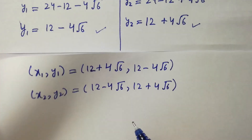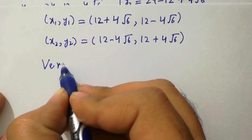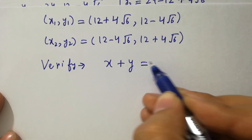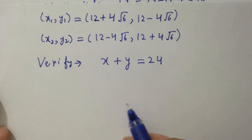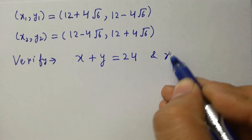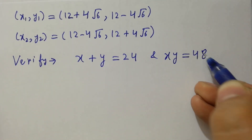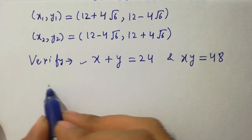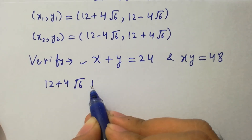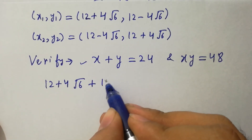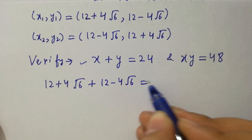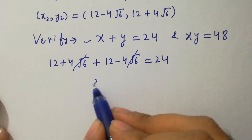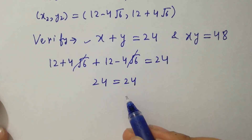In the next step, I am going to verify x plus y equal to 24 and x times y equal to 48. For the first condition: (12 plus 4 square root of 6) plus (12 minus 4 square root of 6) equal to 24. The 4 square root of 6 terms cancel, and 12 plus 12 equals 24. Left hand side equals right hand side. ✓